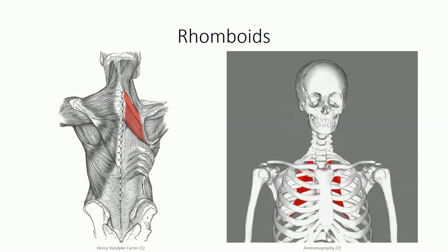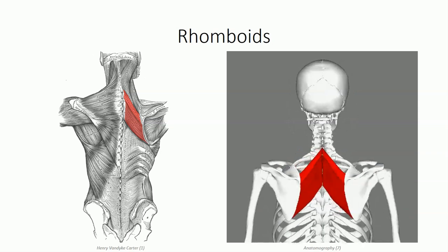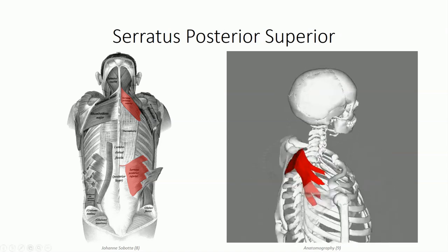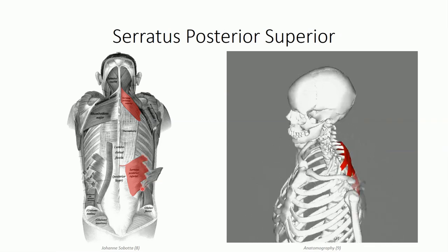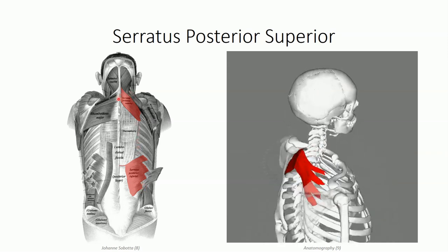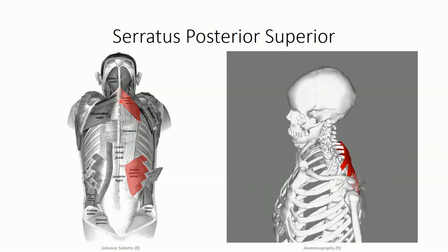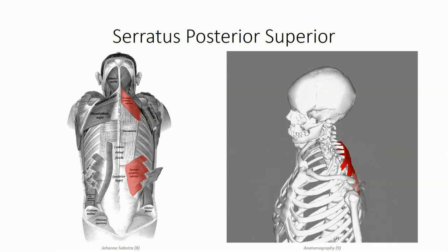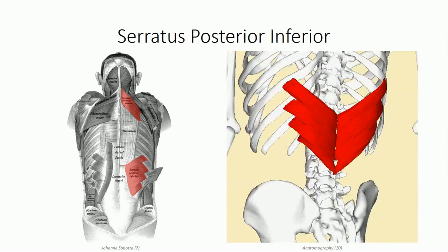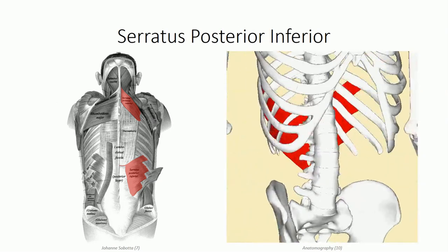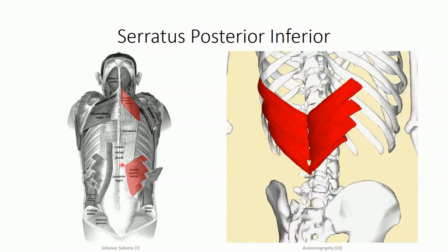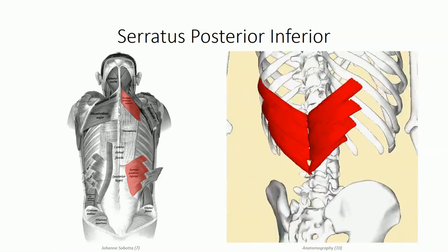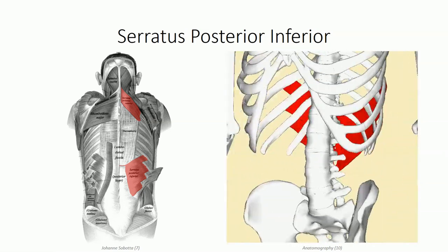The rhomboids' neurovascular supply is from the dorsal scapular artery and nerve. The serratus posterior muscles get their name from the serrated, sawtooth appearance associated with their insertion on the ribs. The serratus posterior superior originates off the spinous processes of C7 through T3 and part of the nuchal ligament, running inferiorly to insert on ribs T2 through T4 and sometimes T5. The serratus posterior inferior originates off the spinous processes of T11 through L2 and runs superiorly to insert on ribs T8 through T12. They receive their neurovascular supplies segmentally through intercostal vessels and nerves.